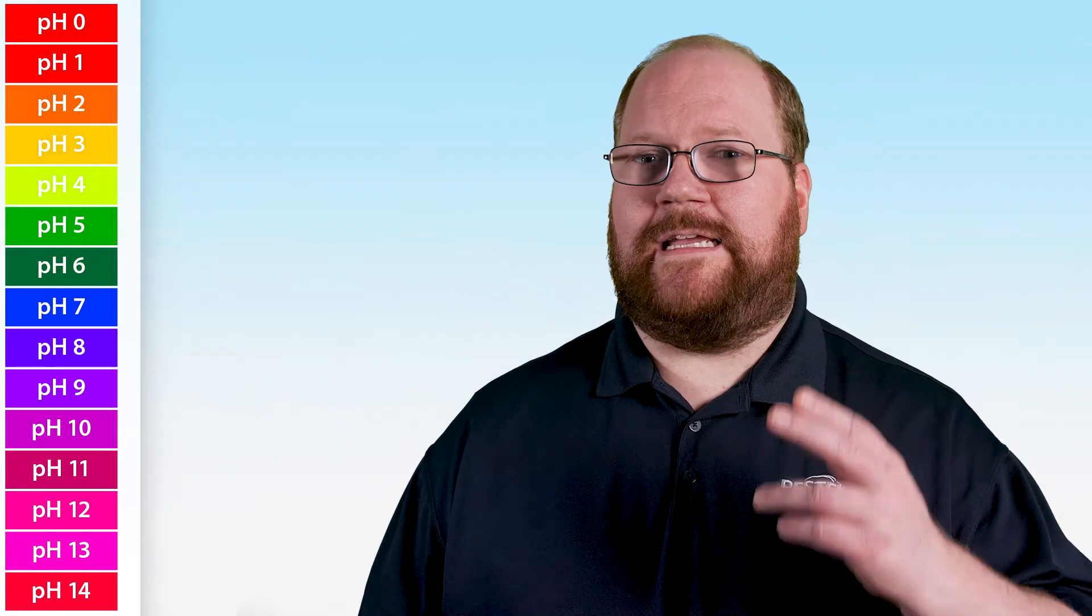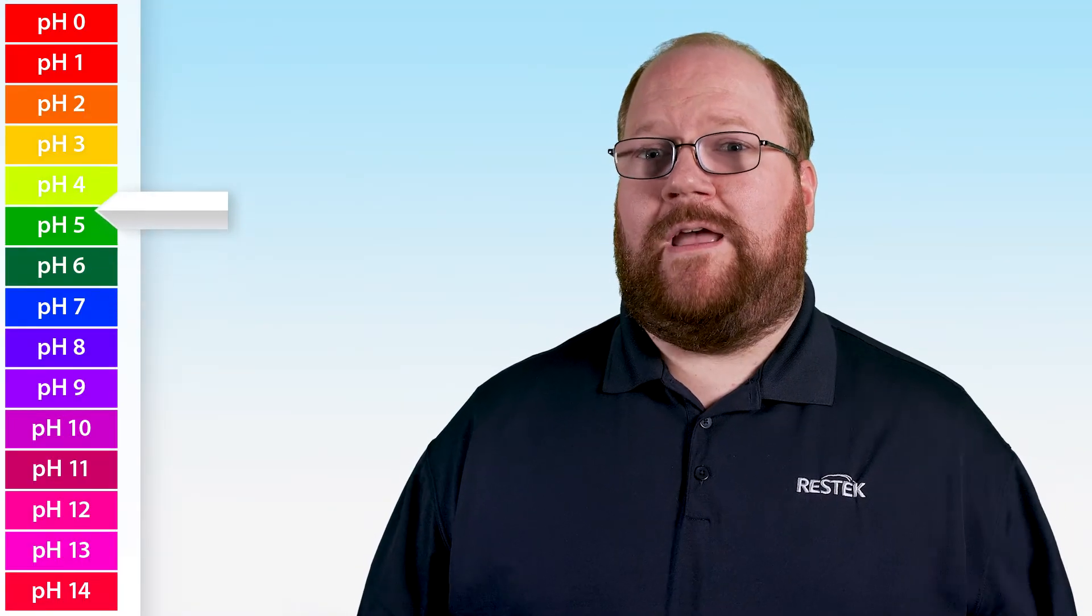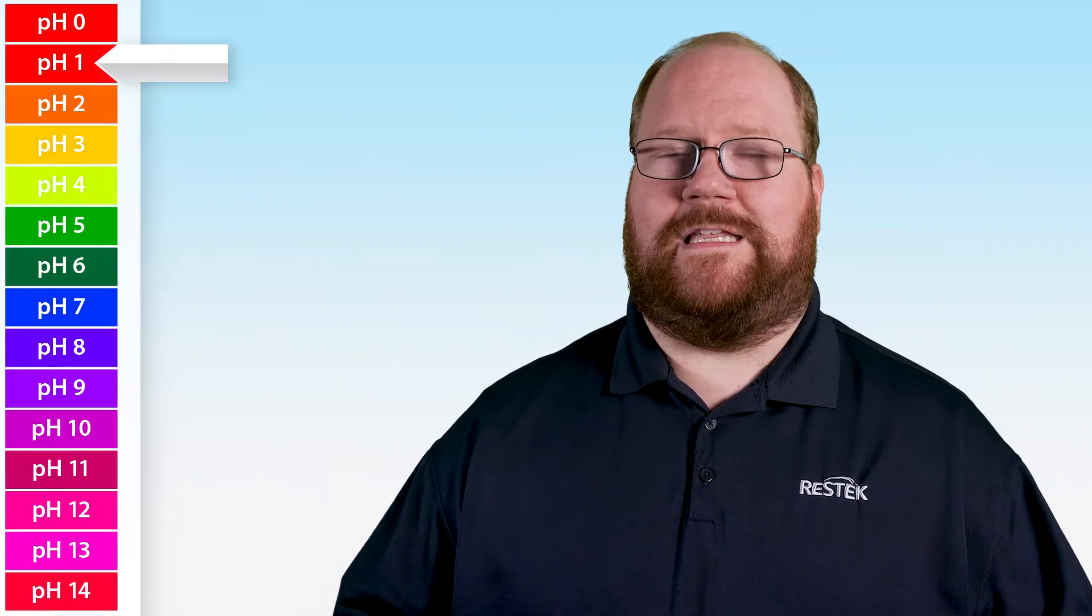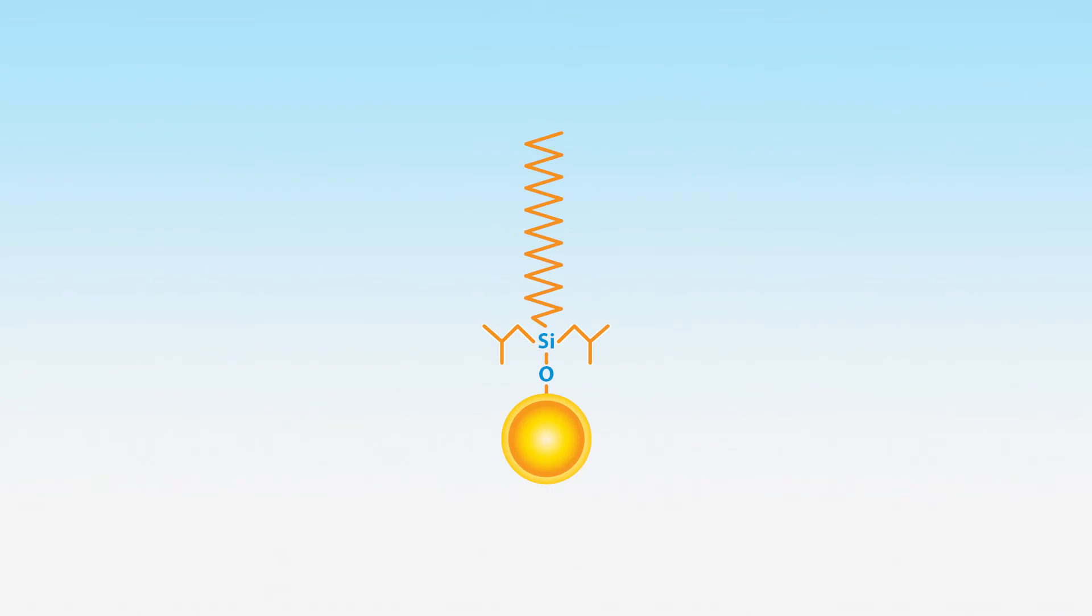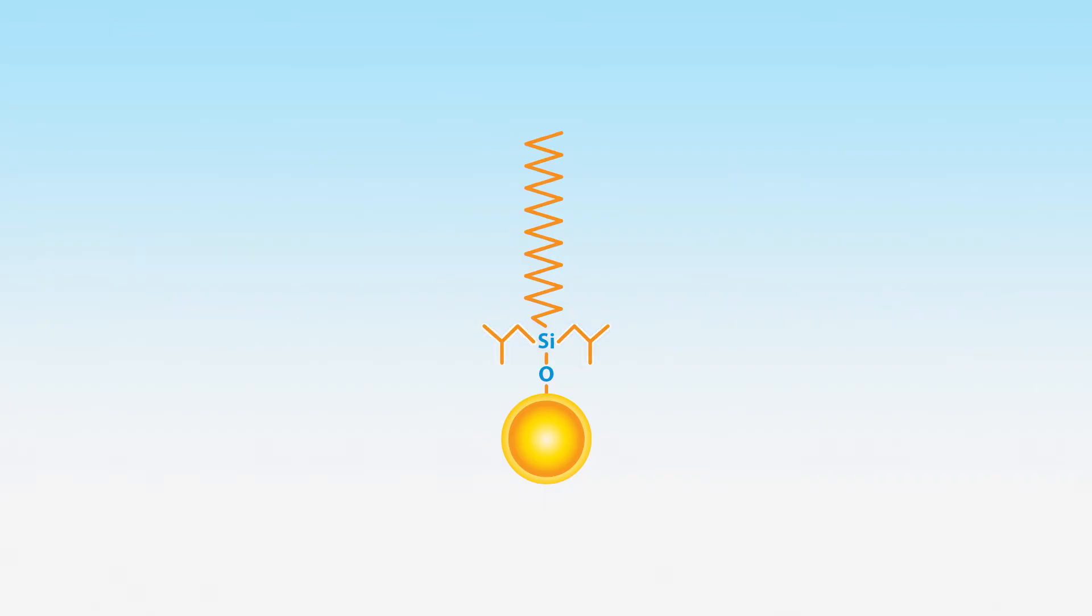Another factor to consider is pH. While low pHs can improve peak shape and the selectivity of a separation, these highly acidic conditions can irreversibly damage your stationary phase. C18 phases with sterically protected ligands excel in low pH environments. These bulky side chains protect the phase from being removed from the surface under acidic conditions, but also allow some extra polar interactions of your analytes with the silica surface for unique selectivity. These assets make them perfect candidates for multiclass and pesticide analyses.